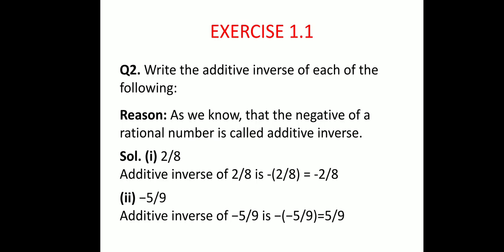Exercise 1.1, let us have a look at question number 2. The question says: write the additive inverse of each of the following. Before moving directly to the solution, it should be known to us how to find out the additive inverse of a rational number. Additive inverse means finding the negative of a given rational number. We need to add a rational number to the given rational number so that the answer is equal to 0. So to find out the additive inverse, I need to take the negative of the given rational number.